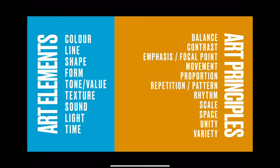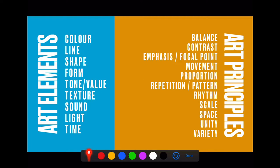Art elements are the ingredients in an artwork — just the basic properties: colour, line, shape, form, tone, texture, even sound, light, and time. It is impossible to create an artwork without including one of these art elements. By nature, if you have made art, you have explored these things — you perhaps just haven't analysed it. We're going to spend this video analysing the different properties of art elements so we can learn to write about art and simply look at and enjoy a good artwork.